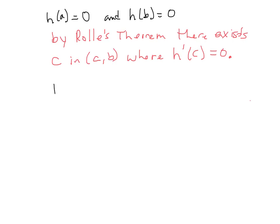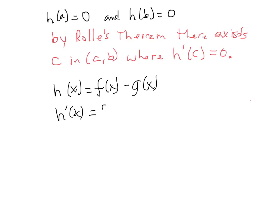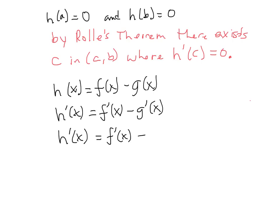Let's go back to h(x) and take its derivative. The derivative of h(x) is simply the difference of the derivatives of f(x) and g(x). The derivative of g(x) is just the slope of the yellow line, so we can write h'(x) = f'(x) - [(f(b) - f(a)) / (b - a)], where that second term is just the constant slope of the line.